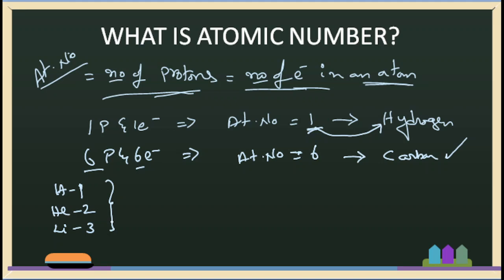We have different atoms with different names. We identify 118 types of atoms, arranged in a tabular form — what we know as the periodic table. The number of protons is equal to the number of electrons, and that is equal to the atomic number.